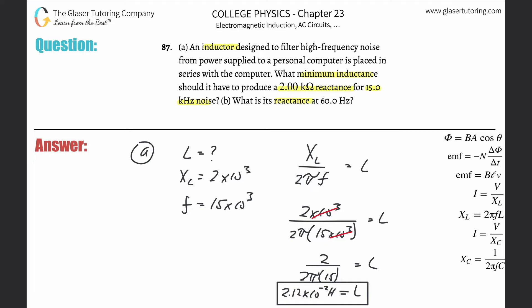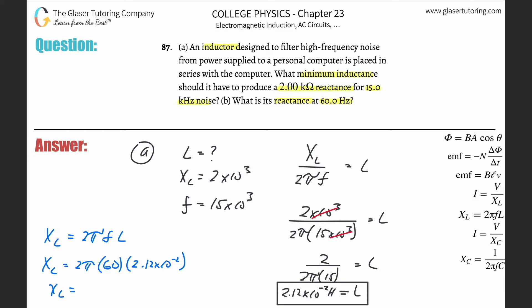Now let's look at part B: what is its reactance at 60 hertz? We need the inductive reactance again using the formula X_L = 2 pi times frequency times inductance. We already found the inductance, so we just plug in: 2 pi times the new frequency of 60 hertz, multiplied by 2.12 times 10 to the minus 2.